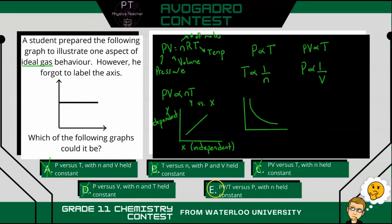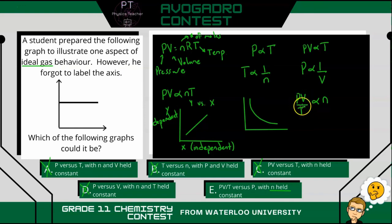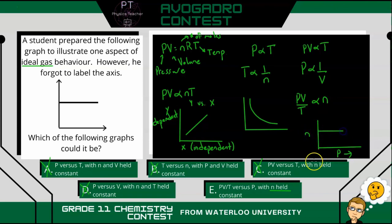By process of elimination we can go with E, but let's look at why. We have PV over T versus P itself. Rearranging the ideal gas law, PV over T is proportional to n. This question says n is held constant. So as pressure increases, PV over T remains constant — that's the graph we're looking for: a horizontal line showing PV over T is constant regardless of pressure.